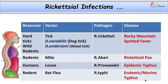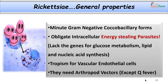Rodents are reservoirs of Rickettsia akari, which causes rickettsial pox, transmitted by the mite. Epidemic typhus is transmitted by the body louse and the disease is common all over the world; the causative agent is Rickettsia prowazekii, and humans are the reservoirs of infection. Endemic or murine typhus is caused by Rickettsia typhi, with the rat flea as the vector.